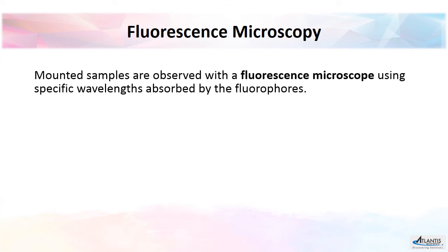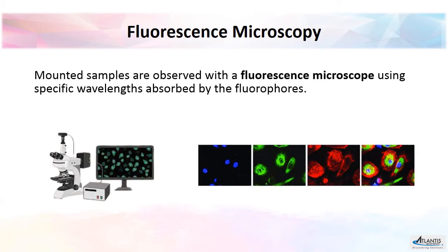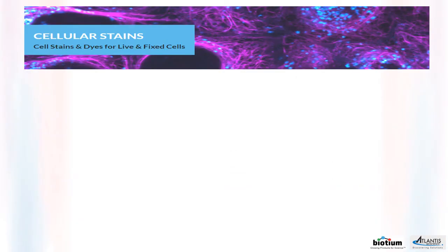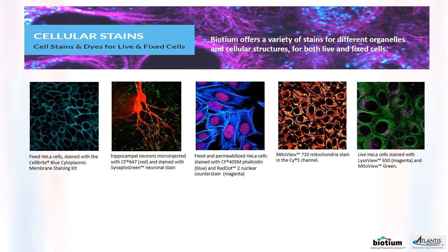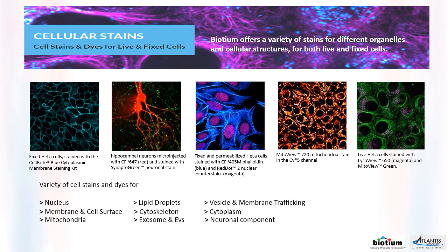The last step is to visualize the protein of interest using fluorescence microscopy. Each channel can be combined and utilized if using more than one marker. This can be applied to many organelles and cellular structures for both live and fixed cells. With outstanding performance and ease of use, this could be an excellent option for your immunofluorescence detection.